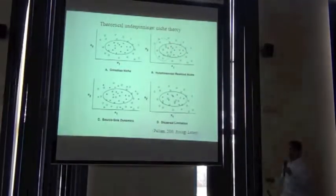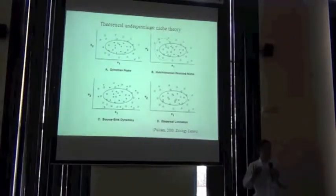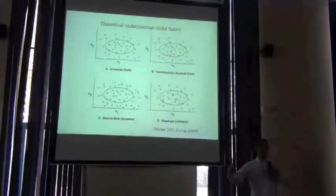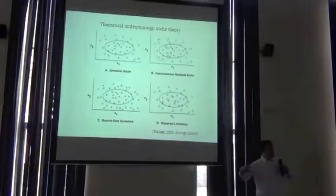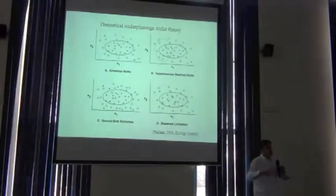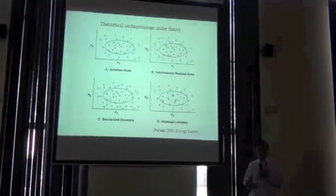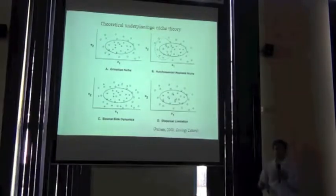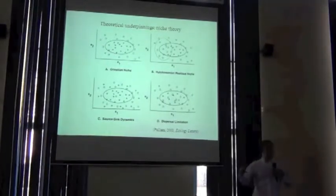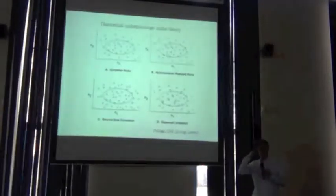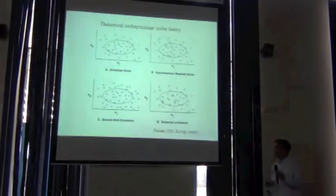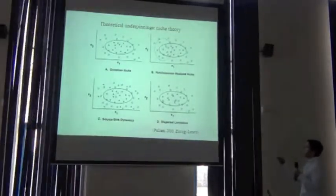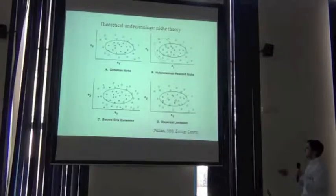So this might be the fundamental niche, or the Grinnellian niche, of our species of interest, and this other species is a competing species. There's part of the fundamental niche that our species of interest doesn't actually occur in. In effect, that fundamental niche gets reduced down to what Hutchinson referred to as the realised niche. So we go from the fundamental niche to the realised niche.